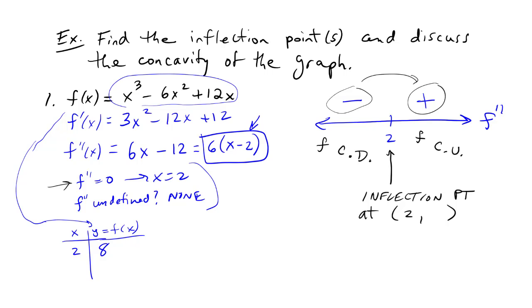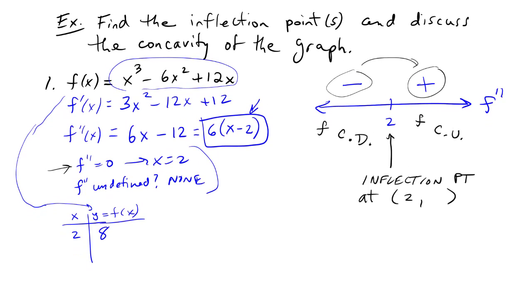So now we can summarize. We have concave up, oops I forgot to fill in the 8 there, we have concave up on (2, ∞). And we have concave down on (-∞, 2).